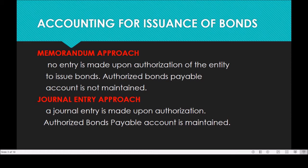Under the journal entry approach, a journal entry is made upon authorization. Upon authorizing the company to issue bonds, they will prepare a journal entry debiting unissued bonds and then crediting authorized bonds payable. The authorized bonds payable account title is maintained under the journal entry approach. The most common approach used in the real world is the memorandum approach, so we will focus on that.